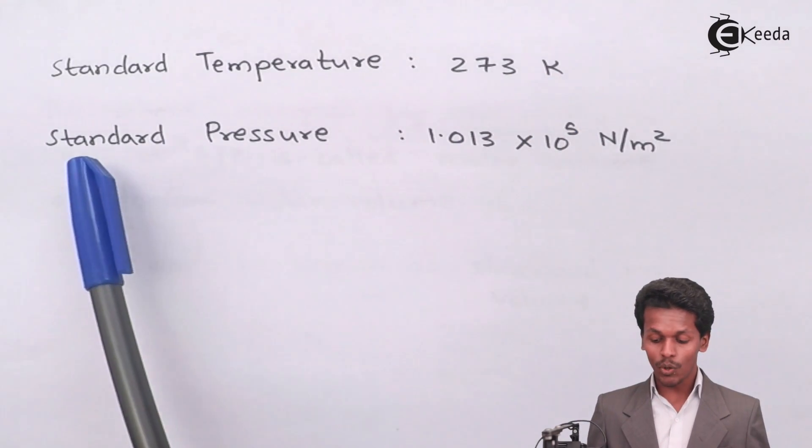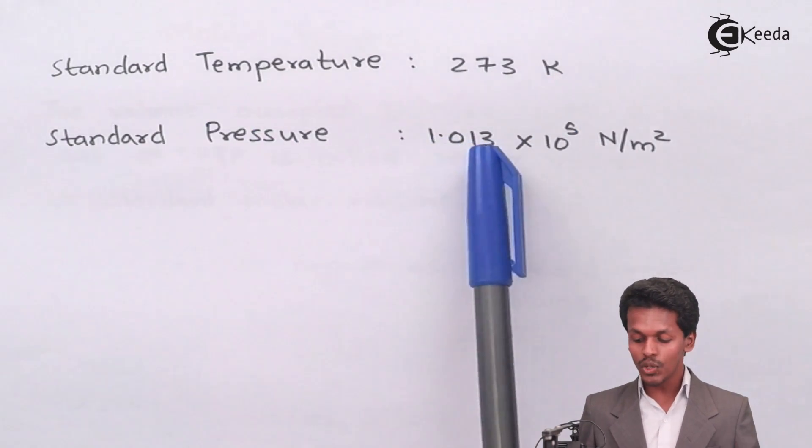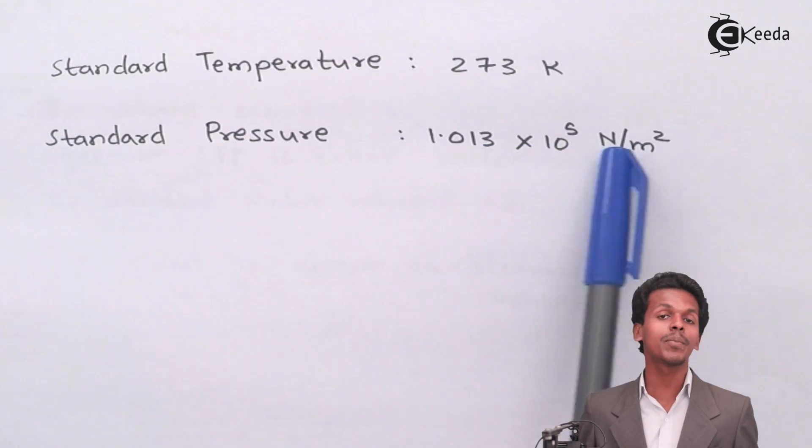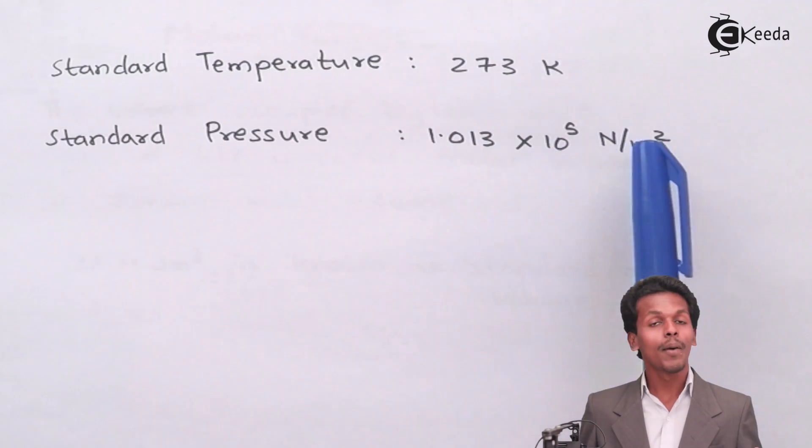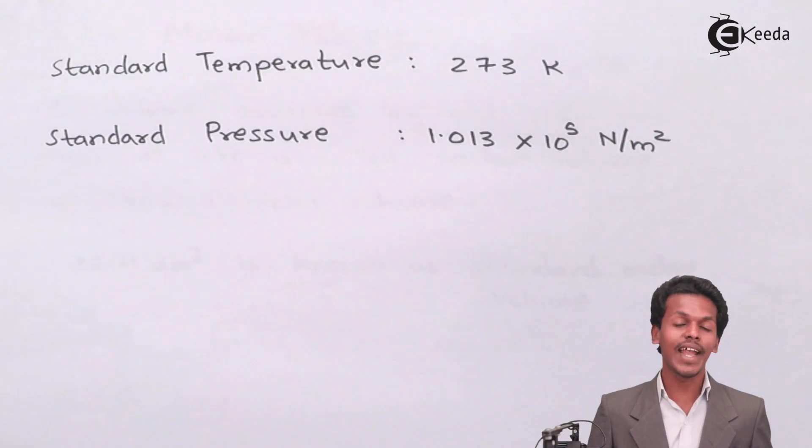By that, when I am talking about standard pressure, it is nothing but 1.013 × 10⁵ Newton per meter square, which means 1.013 × 10⁵ Pascal, which is nothing but 1 atmospheric pressure.